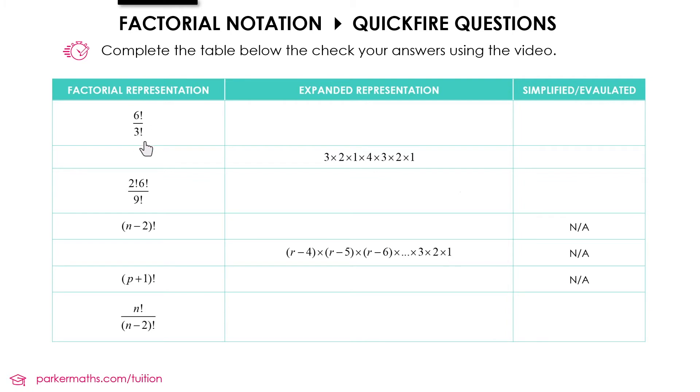So we'll start with 6 factorial divided by 3 factorial. We can write that as 6 times 5 times 4 times 3 times 2 times 1 divided by 3 times 2 times 1. And because on top and bottom we're multiplying by 3 times 2 times 1 we can cancel that out. That leaves us with 6 times 5 times 4 which evaluates to 120.